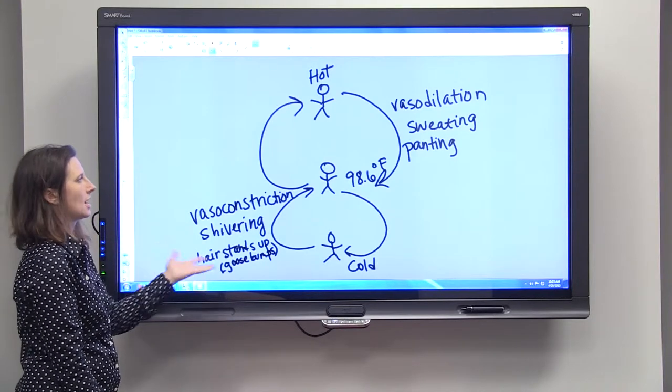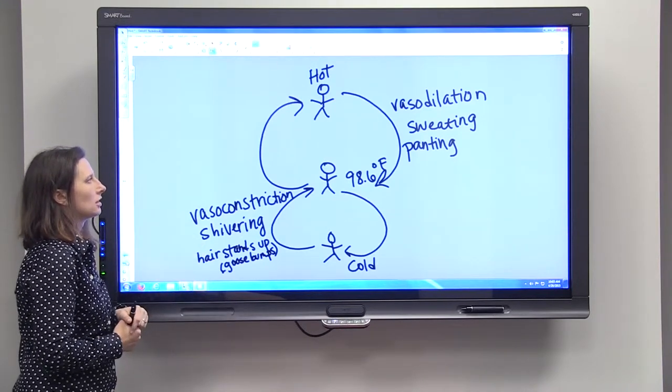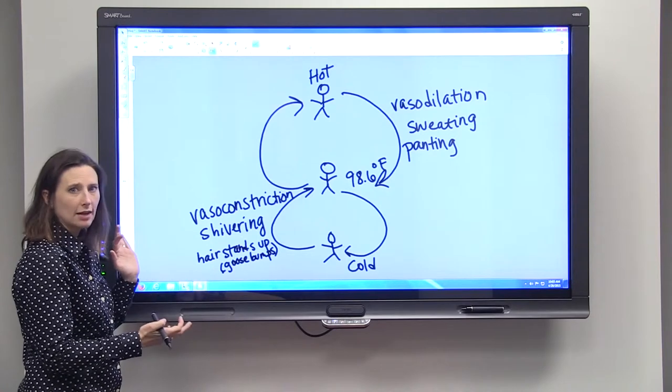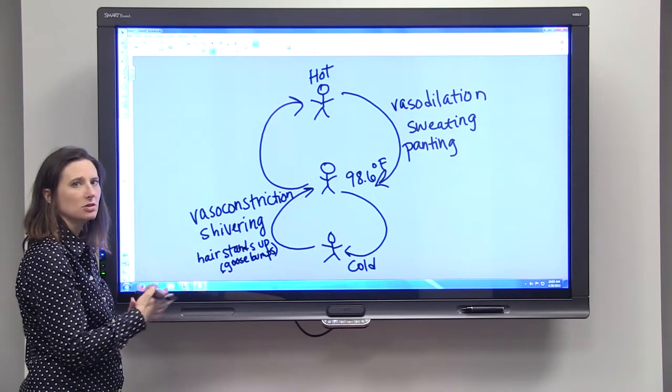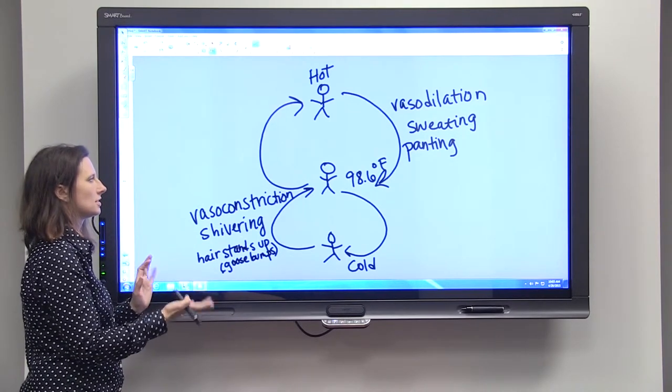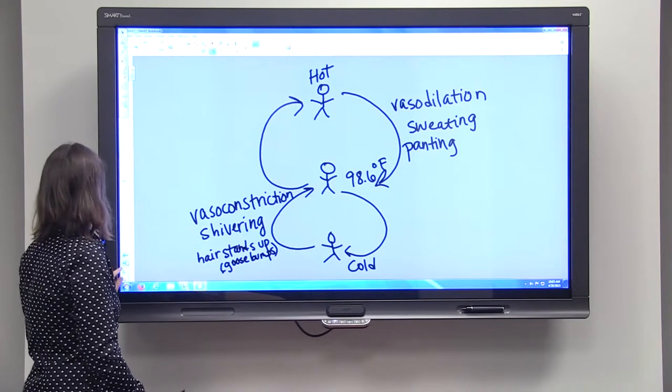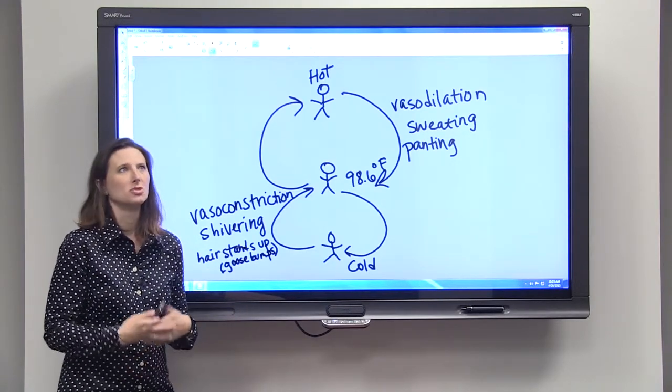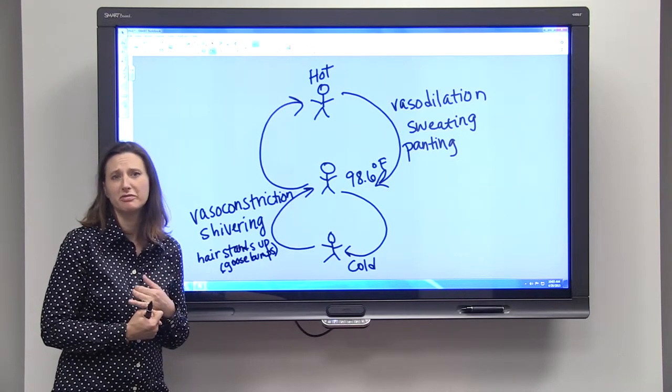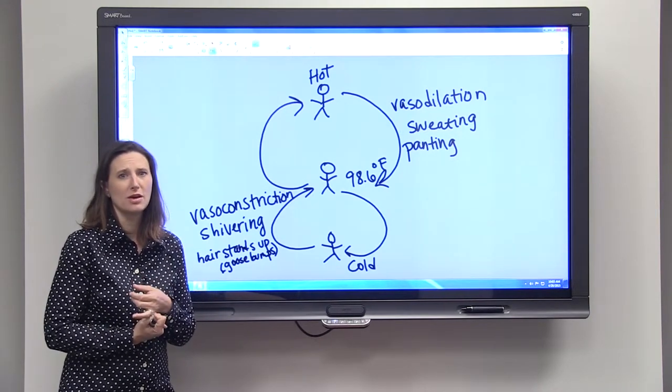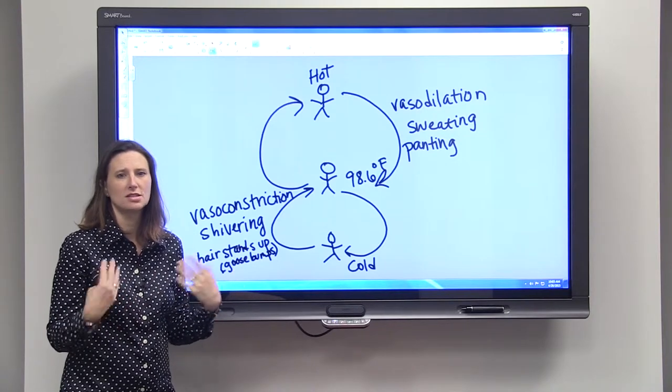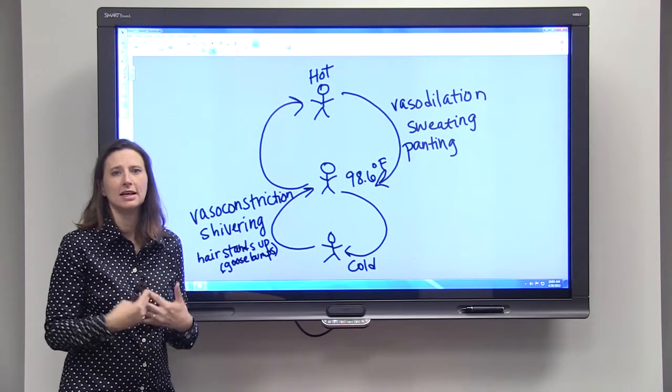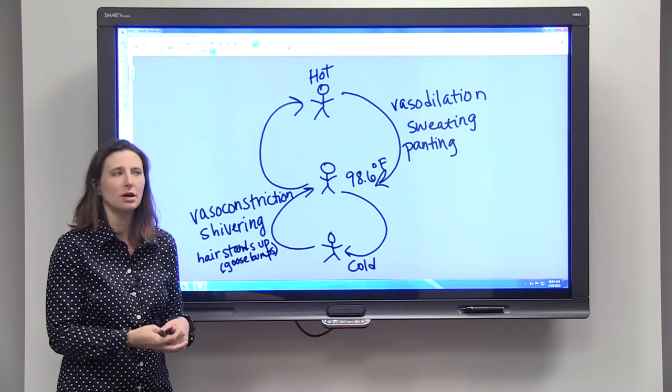So this is how most endotherms regulate their temperature. They have an internal system that switches so that they can get back to a constant temperature. Most ectotherms do things like laying in the sun if it's a little cold. Before they go in their burrows, they'll lay in the sun, soak up as much heat as they can, then they'll go into the underground burrows.